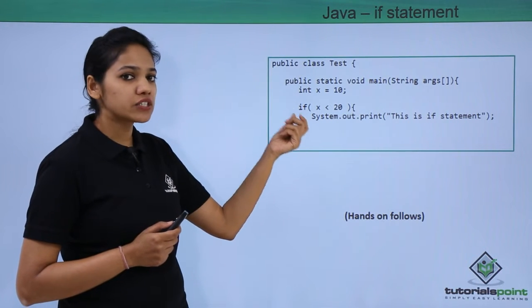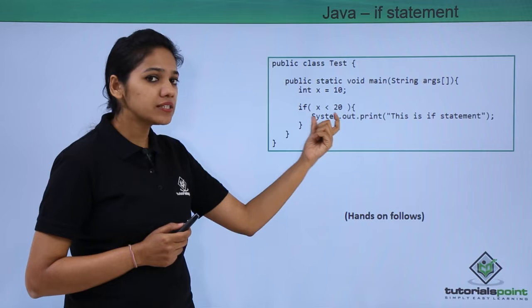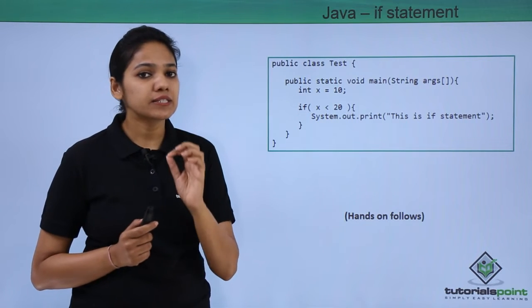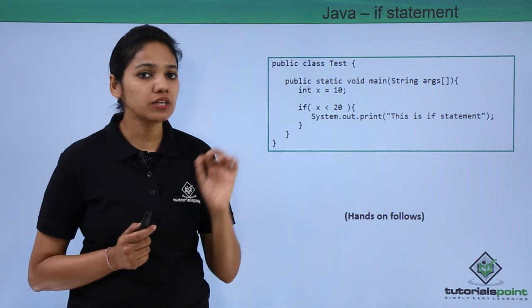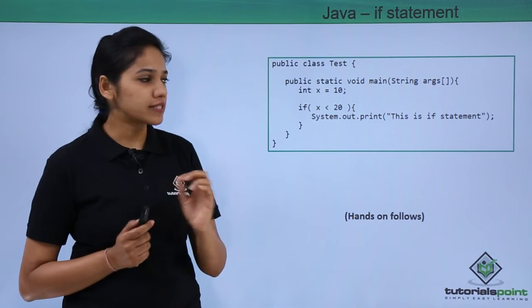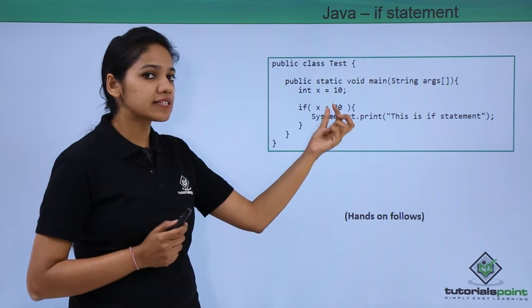For writing an if condition, we use a keyword called if, and in the brackets we provide the expression, a boolean expression whether it is true or false. That is x is less than 20.